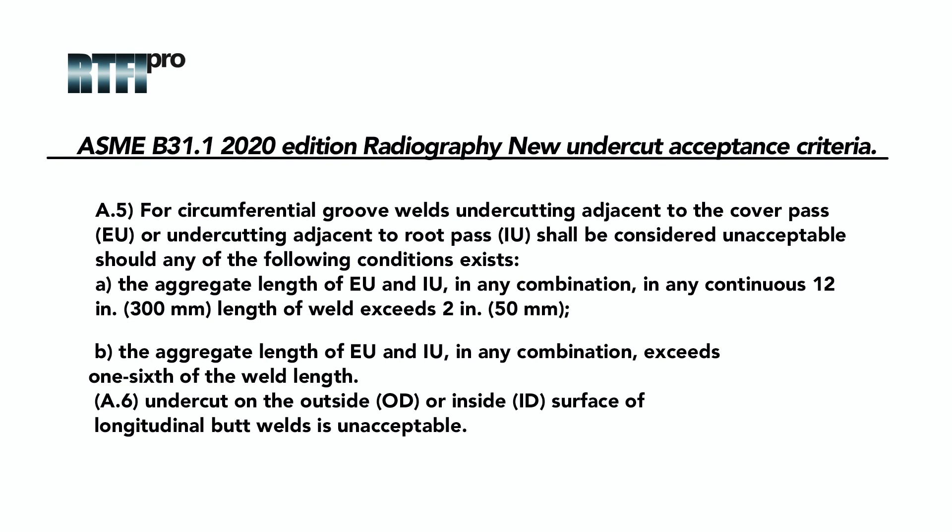The aggregate length of external undercut and internal undercut in any combination in any continuous 12 inch (300mm) length of weld exceeds 2 inch (50mm). The aggregate length of external undercut and internal undercut in any combination exceeds 1/6 of the weld length. A.6: Undercut on the outside diameter or inside diameter surface of longitudinal butt welds is unacceptable.